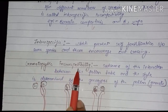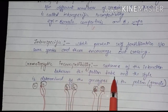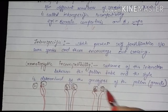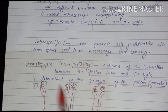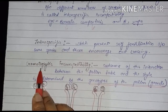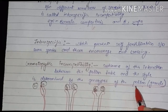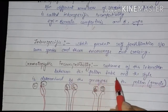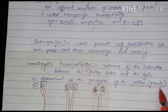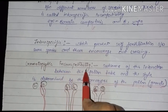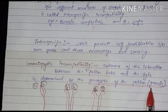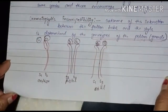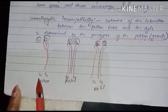Gametophytic incompatibility: the outcome of interaction between the pollen tube and style is determined by the genotype of the pollen grain. The word 'gametophytic' comes from 'gamete,' and the gamete here refers to the pollen. So we decide compatibility based on the genotype — the gene characters — of the pollen. Looking at the diagram, you can see the anther, where alleles are present.